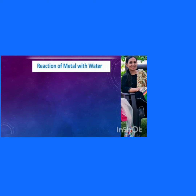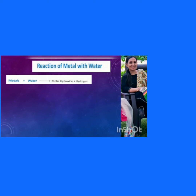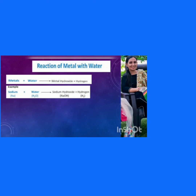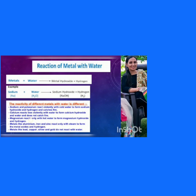Now let us study the reaction of metals with water. When metals react with water, they form metal hydroxide and hydrogen gas is evolved. For example, when sodium reacts with water, sodium hydroxide and hydrogen gas are formed.